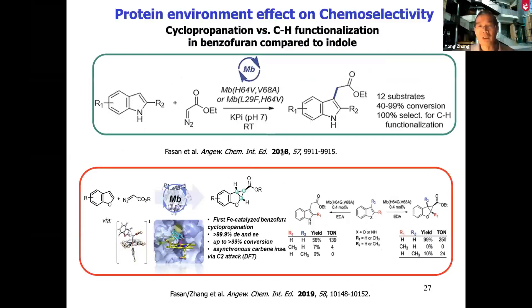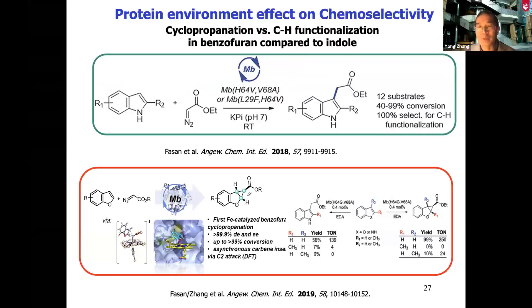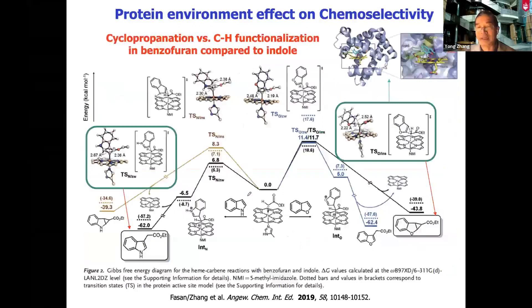Also, for a very similar system — just an N-to-O difference — they undergo a different chemical reaction, which is the theotren system where cyclopropane formation occurs. The origin of this difference can also be given excellent prediction, though I will not go over the details.